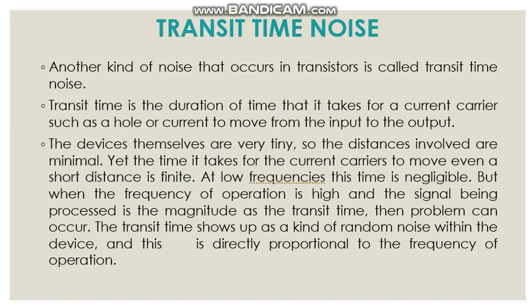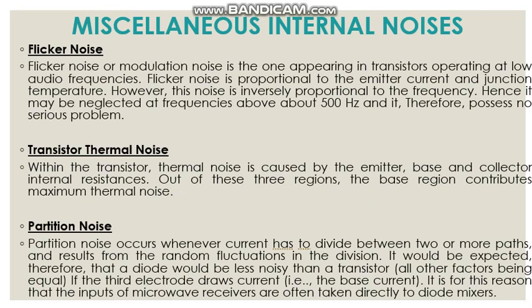Next is transit time noise. Another kind of noise that occurs in transistors is called transit time noise. Transit time is the duration of time it takes for a current carrier such as a hole or electron to move from the input terminal to the output terminal. There are also various other types of internal noise: flicker noise, transistor thermal noise, and partition noise. Flicker noise and transistor thermal noise appear in transistors at the emitter, base, and collector regions. Partition noise occurs whenever current has to be divided between two or more parts.